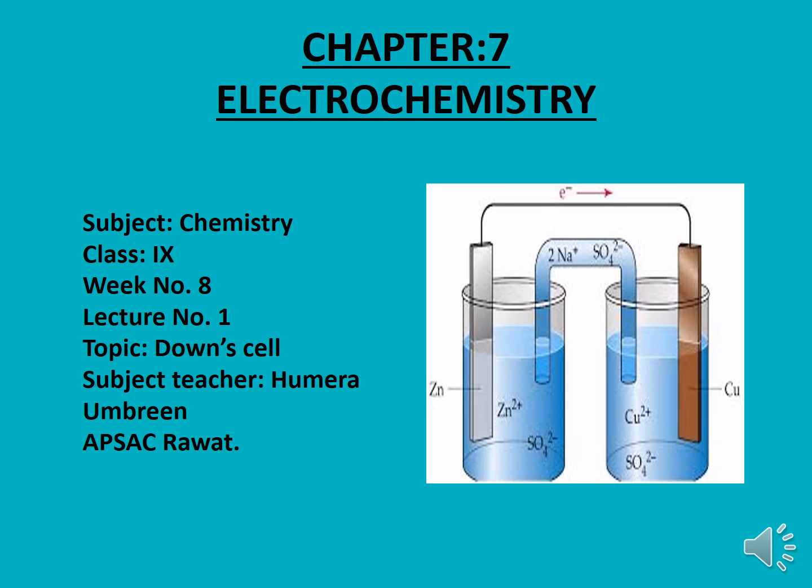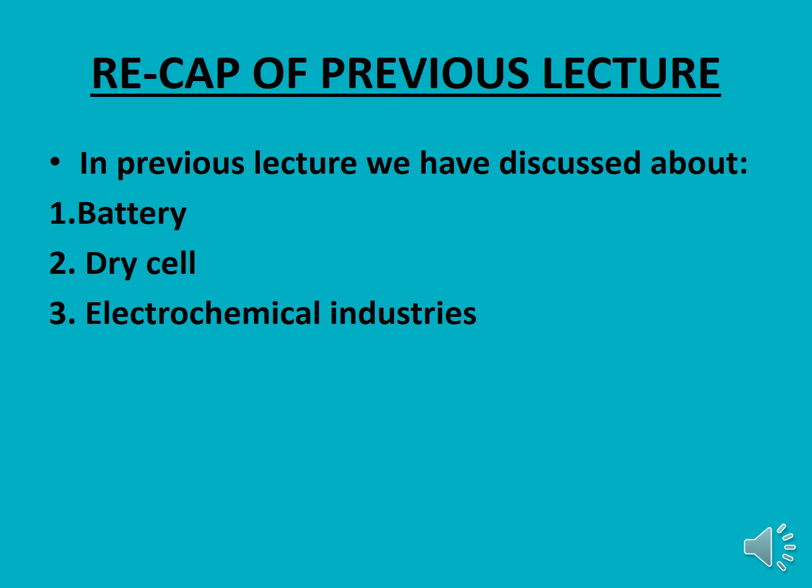Let's start with a recap of the previous lecture. In the previous lecture we discussed batteries, which are galvanic cells used to produce electricity. We also discussed the dry cell, a type of galvanic cell in which zinc is used as the anode and a graphite rod is used as the cathode. We then discussed electrochemical industries and how they are beneficial for the production of different products using electricity.